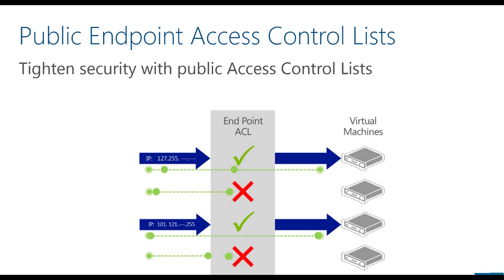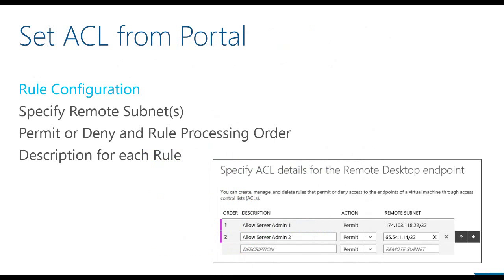Access control lists allow you to secure access to an input endpoint based on the network location of the client. A great example is securing access to Remote Desktop for your virtual machines to only a whitelist of IP addresses for administrators. It's very easy to modify ACLs on the fly using PowerShell or the management portal. Connectivity between services is another common scenario — for instance, allowing access to SQL Server from a Windows Azure website or any external service in a secure manner.